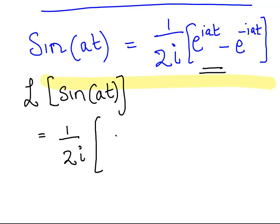So what is that? That is 1 over s minus ia. The other one is e to the Laplace transform of that, e to the minus iat, that is 1 over s plus ia.